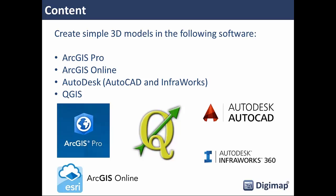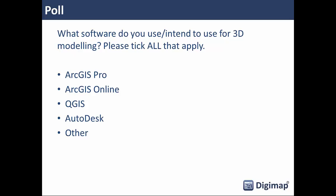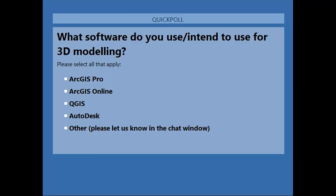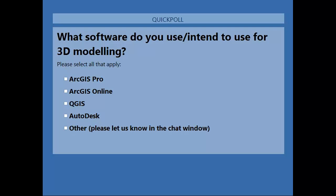Today we're going to look at creating simple 3D models using data directly out of Digimap. We're going to look at some common packages: ArcGIS Pro, ArcGIS Online, a couple of the Autodesk products — AutoCAD and InfraWorks — and finally QGIS. Before we get going it would be useful to know what software everybody uses, so we're going to launch a quick poll. Please tick all that apply. If you use something not listed, let us know in the question section — it's really useful for tailoring our help materials.